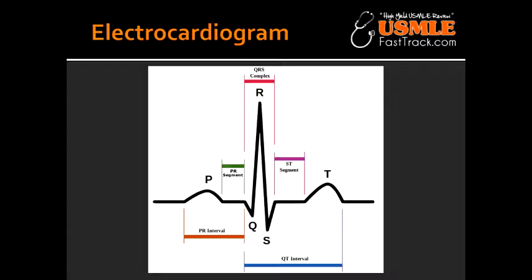What is the QRS complex? The QRS complex is ventricular depolarization, and it lasts less than 120 milliseconds. What is the QT interval? The QT interval represents the mechanical contraction of the ventricles. What is the T wave? The T wave is ventricular repolarization.